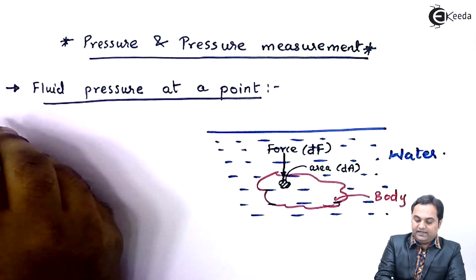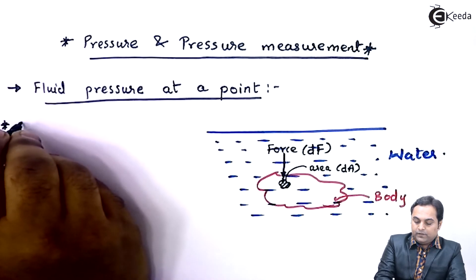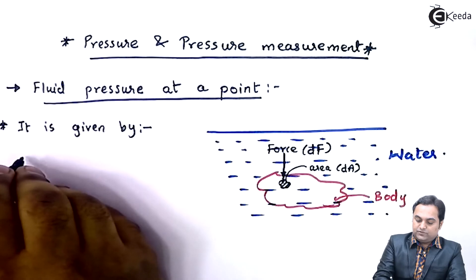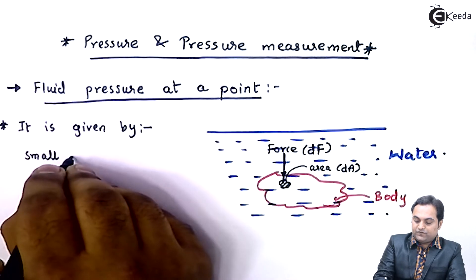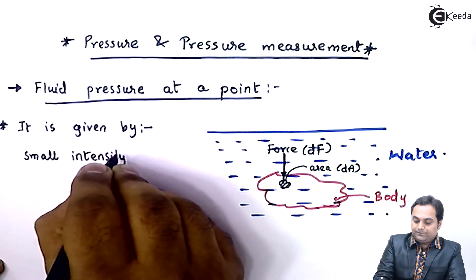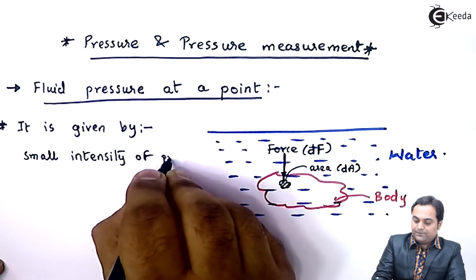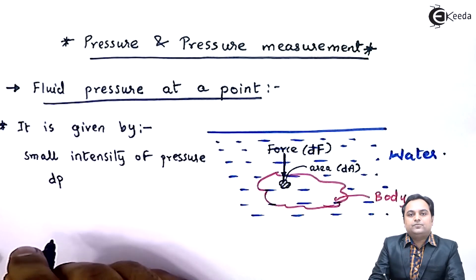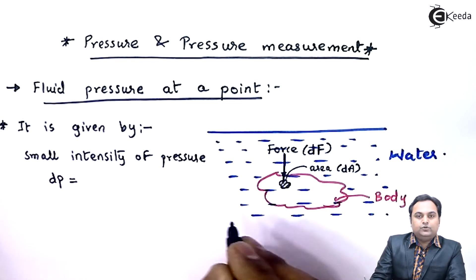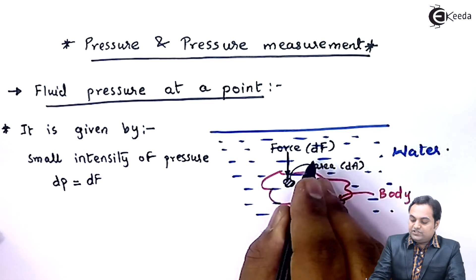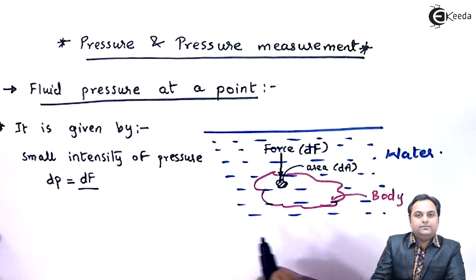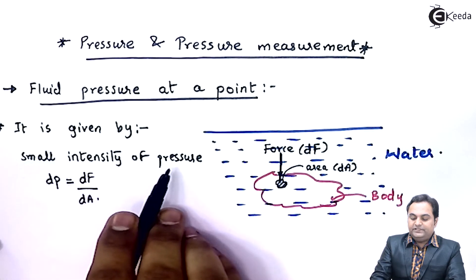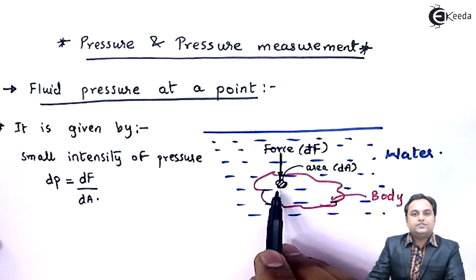So finally, the fluid pressure at a point can be said that it is given by small intensity of pressure. Small intensity of pressure, that will be denoted by dp. Small intensity is equal to it will be given by small amount of force which is dF divided by small amount of area, that is dA. So this is the small intensity of pressure which is acting on small area dA.